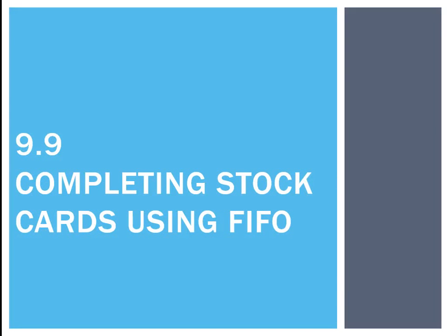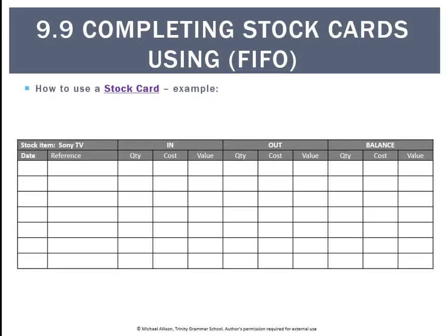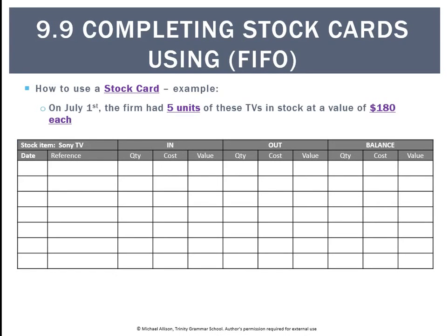Let's look at how stock cards are completed using FIFO. For example, JB HiFi has a Sony TV inventory item which it sells to customers. How would it use a stock card and FIFO to do that? On the 1st of July, the opening balance of stock was 5 units valued at $180 each. We start with the date, 1st of July, reference is balance, and the opening balance was 5 units at $180 for a total of $900.